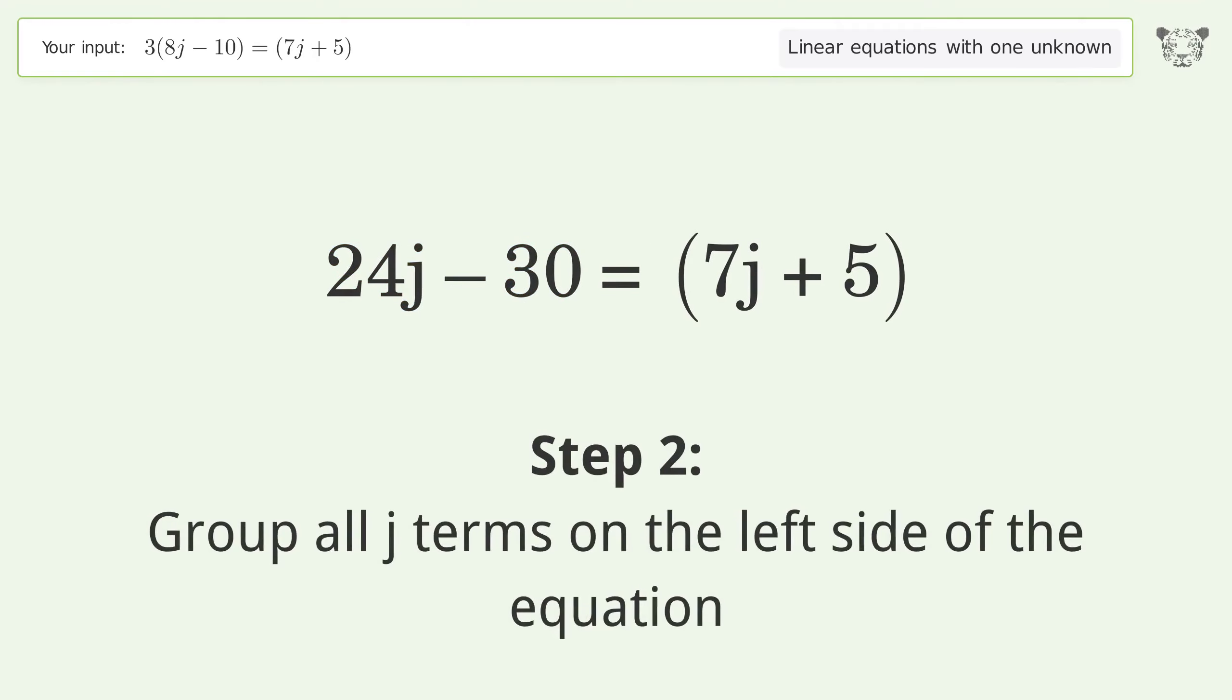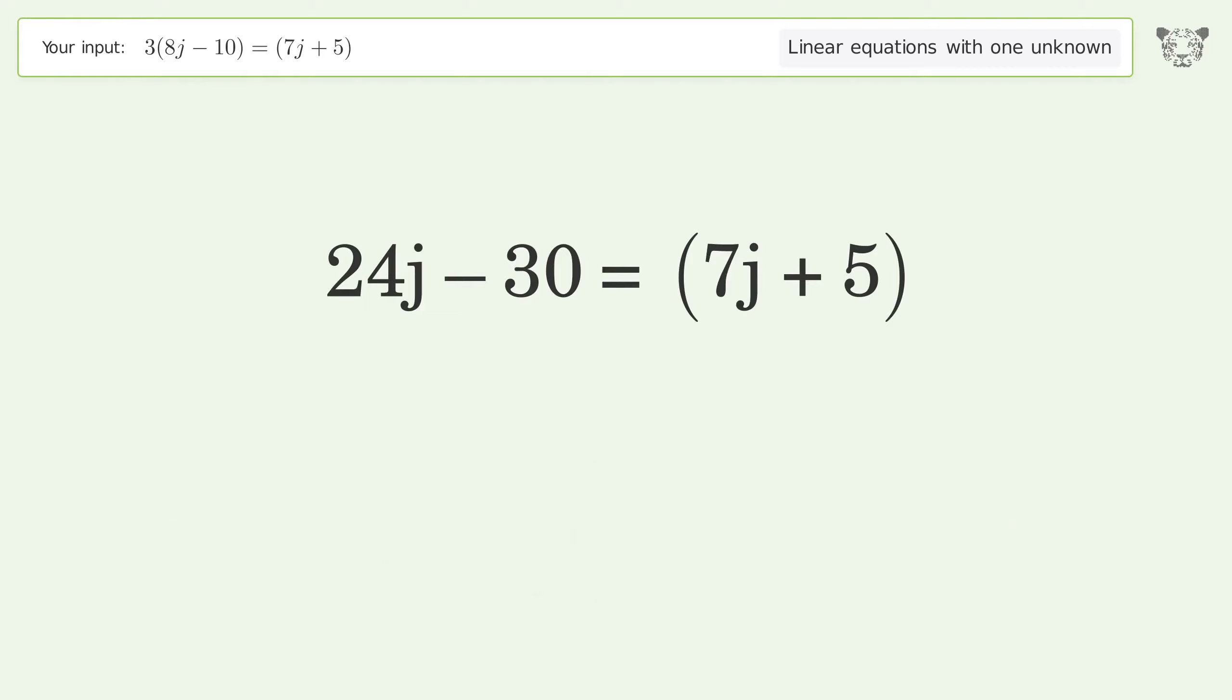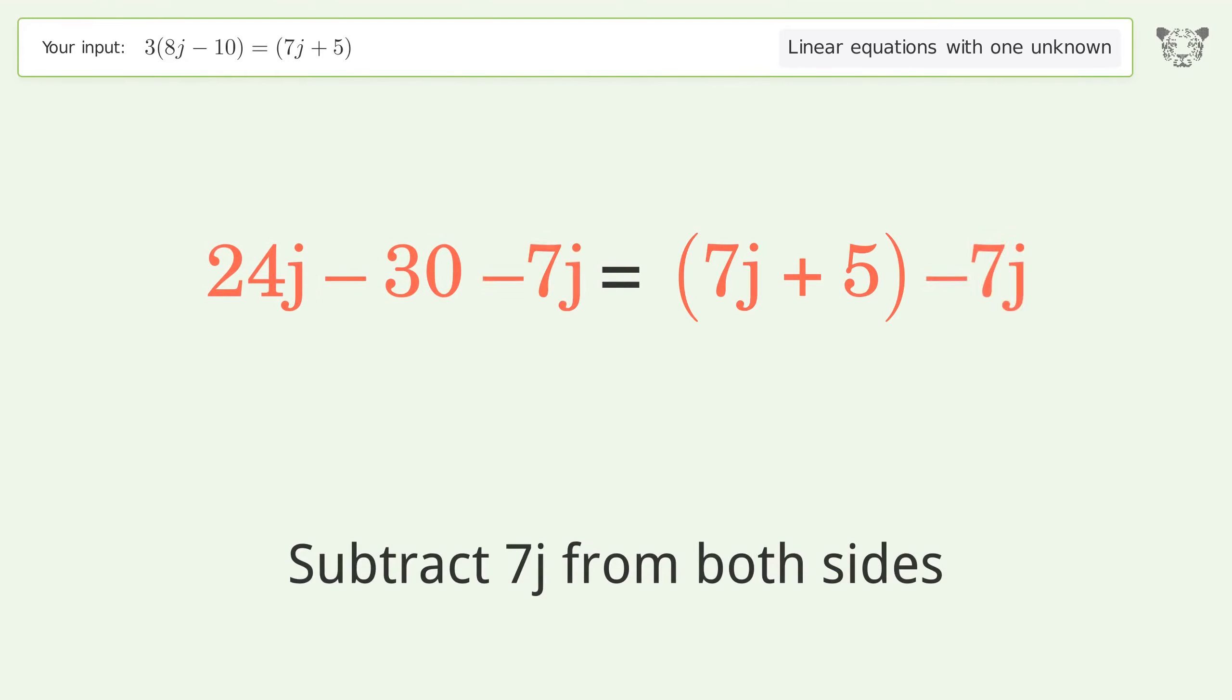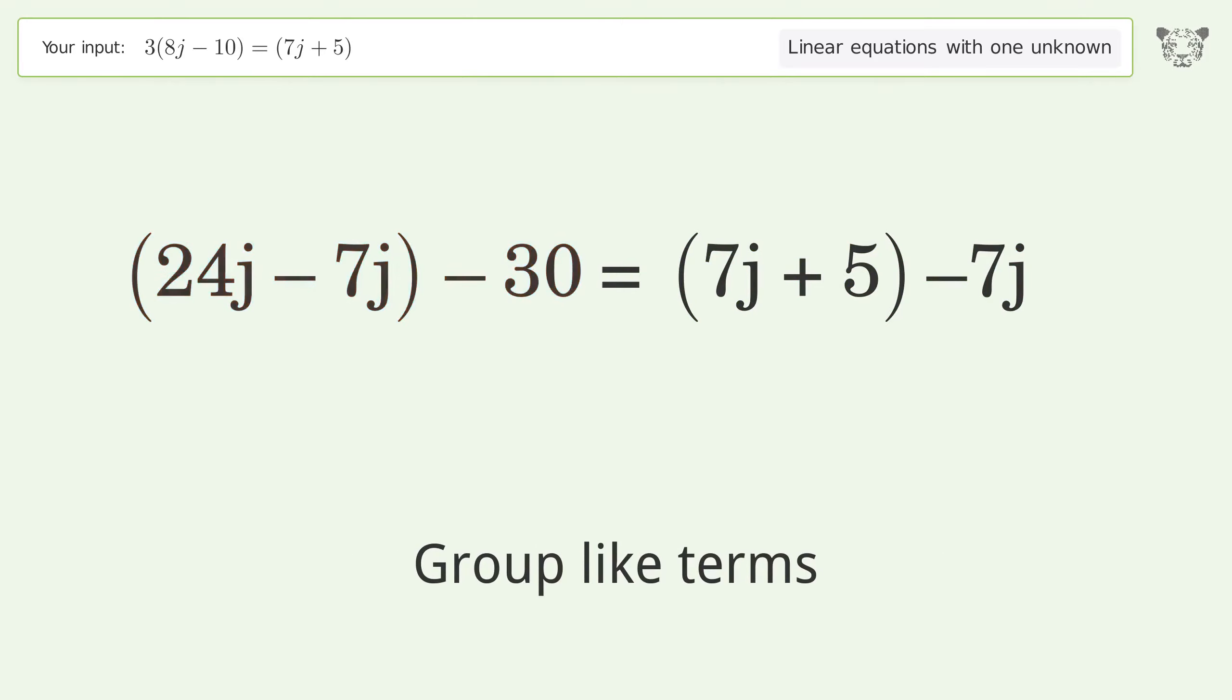Group all j terms on the left side of the equation. Subtract 7j from both sides. Group like terms. Simplify the arithmetic.